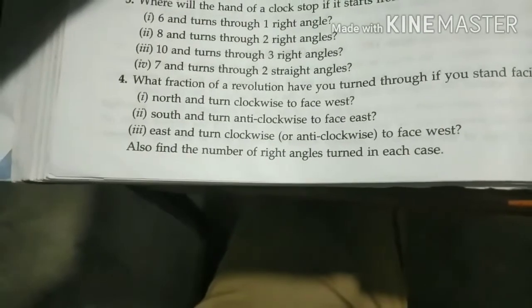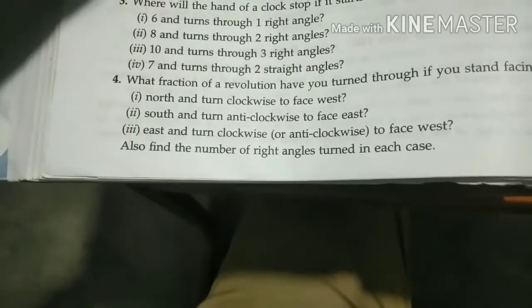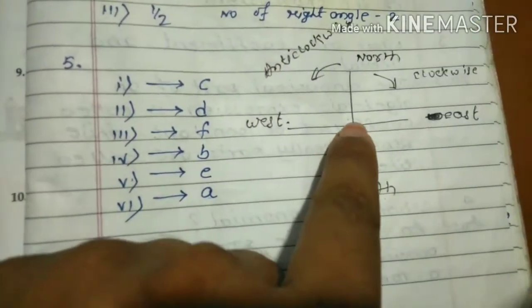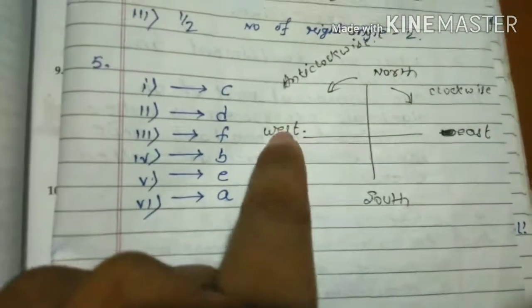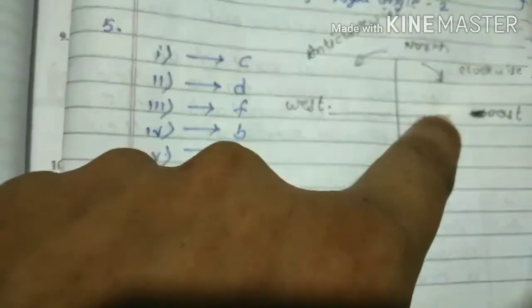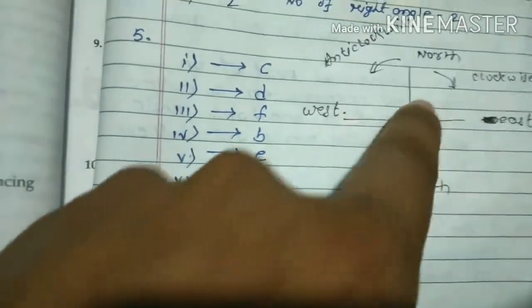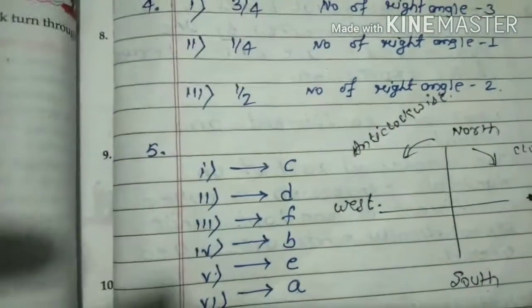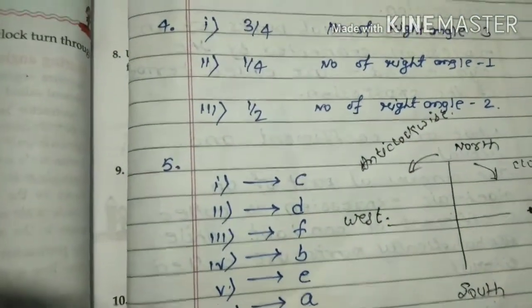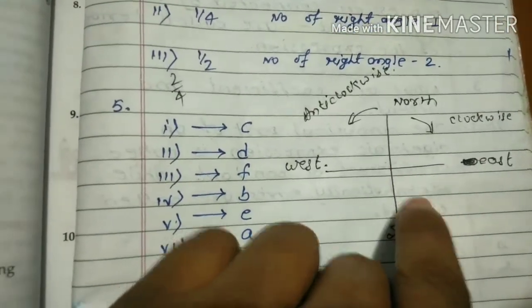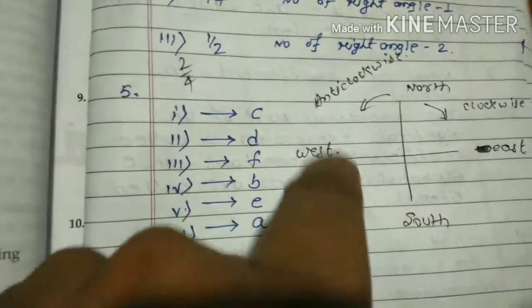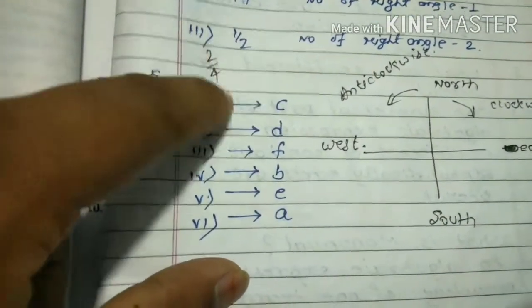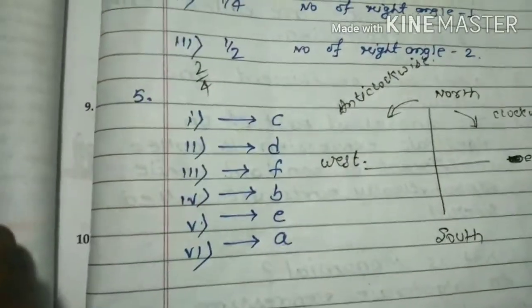Question 3: east, turn anticlockwise to face west. You are at east here, going anticlockwise to west. The fraction will be 1 upon 2. You can see here, 1 part and 2 parts - 2 parts are covered out of 4. So 2 upon 4 equals 1 upon 2.